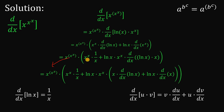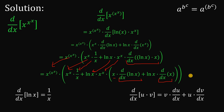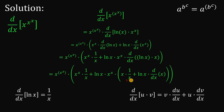Copy x raised to x raised to x, then x raised to x. We have 1 over x — copy — plus ln of x, copy. Then ln of x, also copy. Now for the derivative of ln of x times x, we apply the product rule: the second function times the derivative of the first, plus the first function times the derivative of the second. The derivative of ln of x is 1 over x, and the derivative of x is just 1.